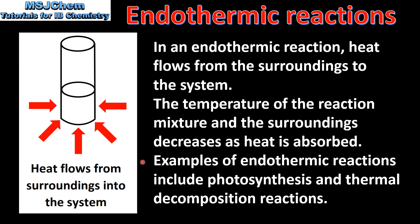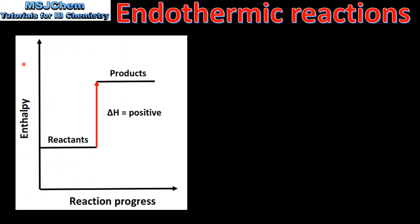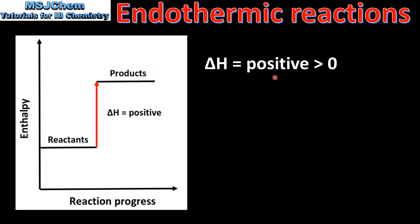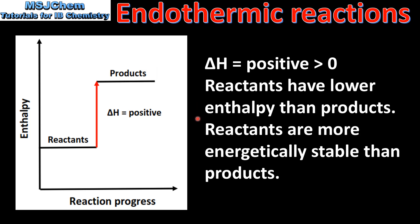Examples of endothermic reactions include photosynthesis and thermal decomposition reactions. Here we have an enthalpy level diagram for an endothermic reaction. The delta H — that's the change in enthalpy — is positive or greater than zero. The reactants have lower enthalpy than the products, and the reactants are more energetically stable than the products.